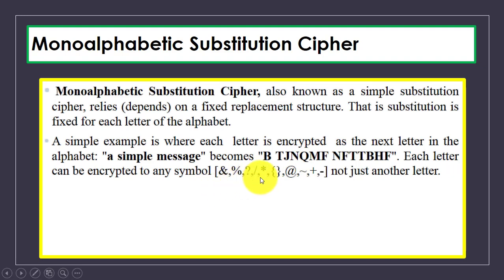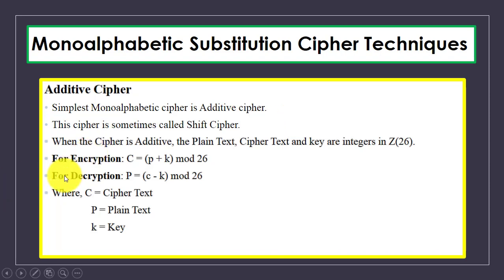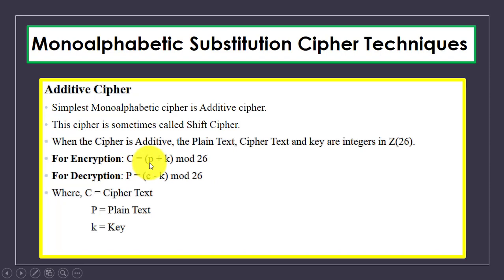Now we have the additive cipher, which is the simplest monoalphabetic cipher technique, also known as the shift cipher. For encryption of plaintext we use the algorithm: C = (P + K) mod 26, where C is the ciphertext, P is the plaintext, and K is the key. For decryption: P = (C - K) mod 26.